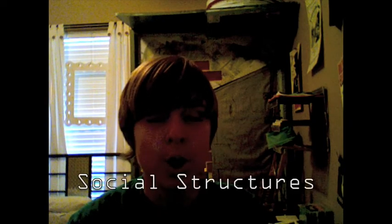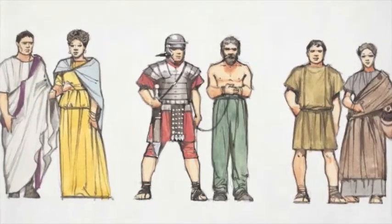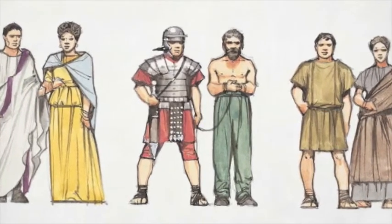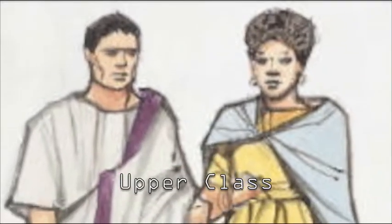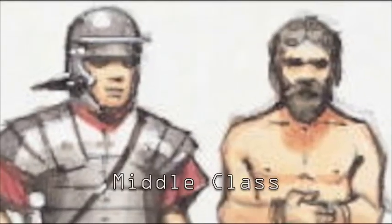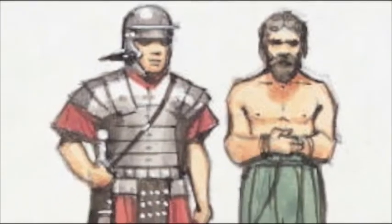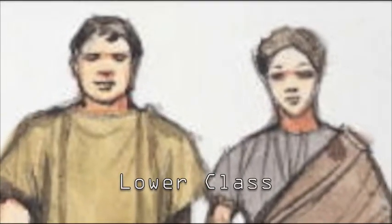We just did economy. Now it's time for social structures. In Rome, social structures was basically like a lot of ancient civilizations — you had your higher class people, your middle class, and your lower class, and many in between. These are the three basic classes: the upper class, the middle class, and last and least, the lower class.